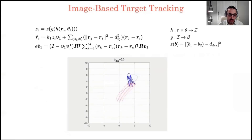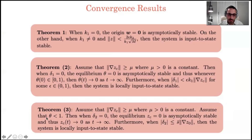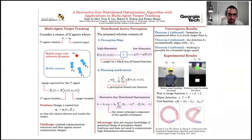We use the image-based tracking cost function Z presented previously — all that needs to change between scenarios is the cost function. We obtained three convergence results: the first about convergence of the formation control law, the second about convergence of the optimization algorithm, and the third about convergence of the tracking algorithm. Please stop by our poster if you have any questions.